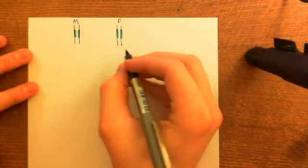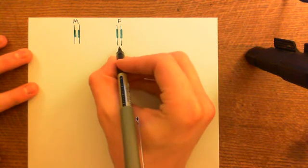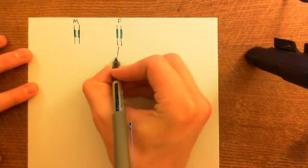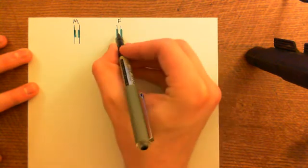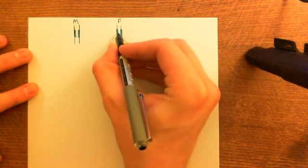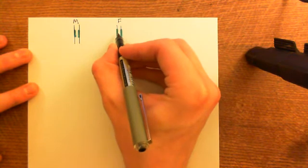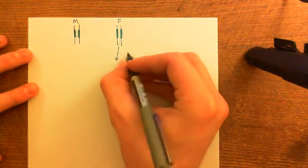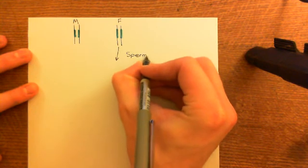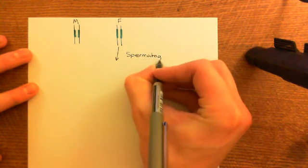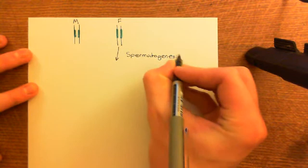Now when they make gametes, especially when the father makes gametes — when he makes sperm — there is a risk that the trinucleotide repeat within the Huntington's disease gene is going to end up expanding. In spermatogenesis, the process of creating sperm, what can happen is the trinucleotide repeat can end up getting expanded.